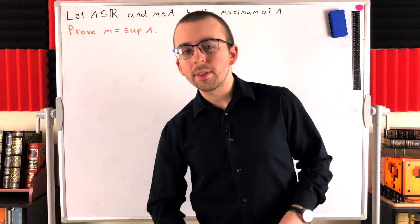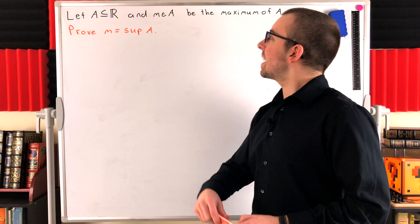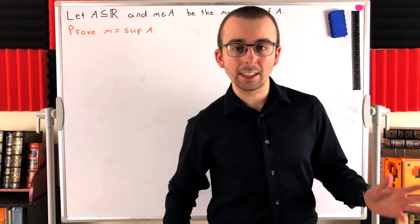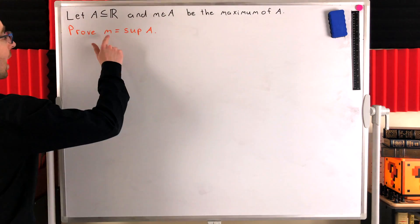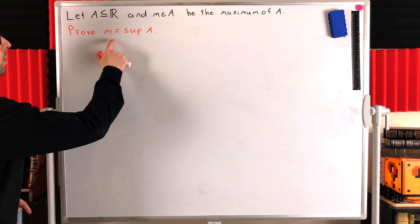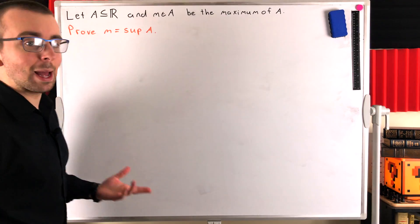So let A be a subset of the real numbers with some element m that is the maximum of A. It's greater than or equal to all elements of A. We want to prove that this maximum element m is the supremum of A, so it's equal to our abbreviation sup A.